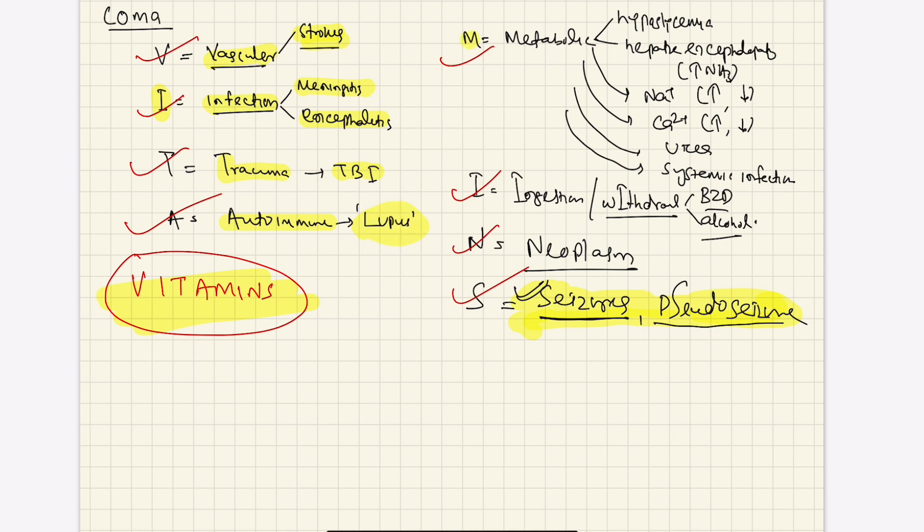M for metabolic - we have very large varieties of reasons starting from hypoglycemia, even hyperglycemic comas, hypernatremia and hyponatremia, sodium increased too much or decreased too much, calcium problem, urea, systemic infection.